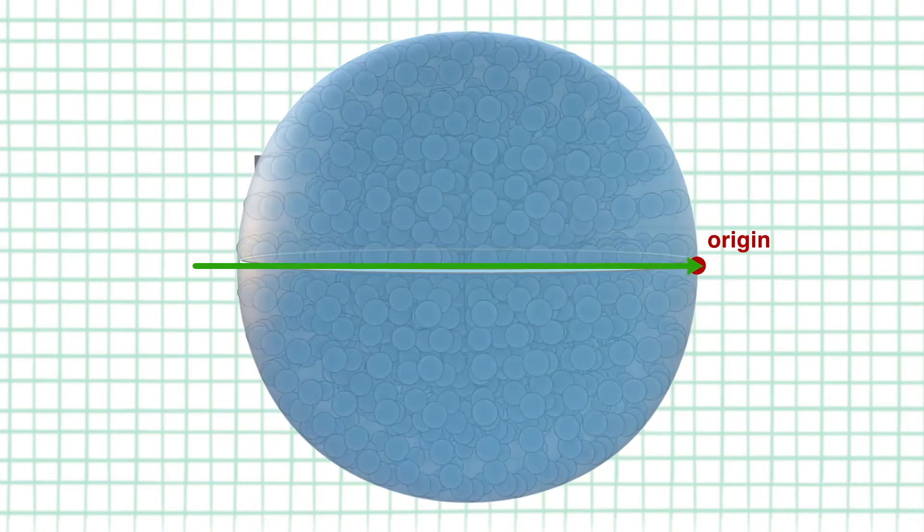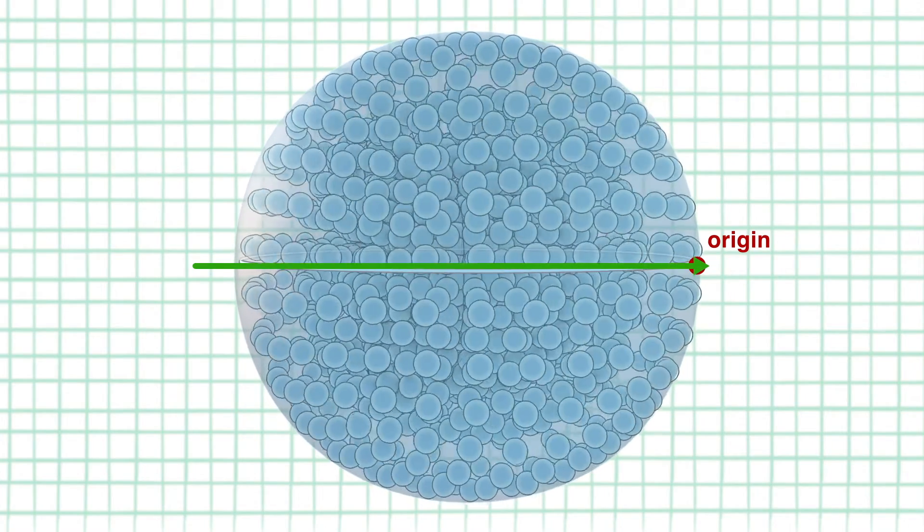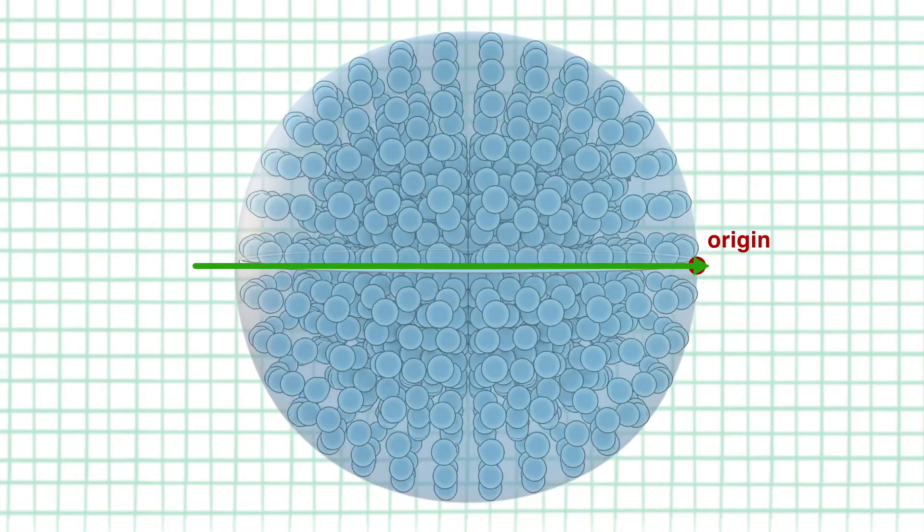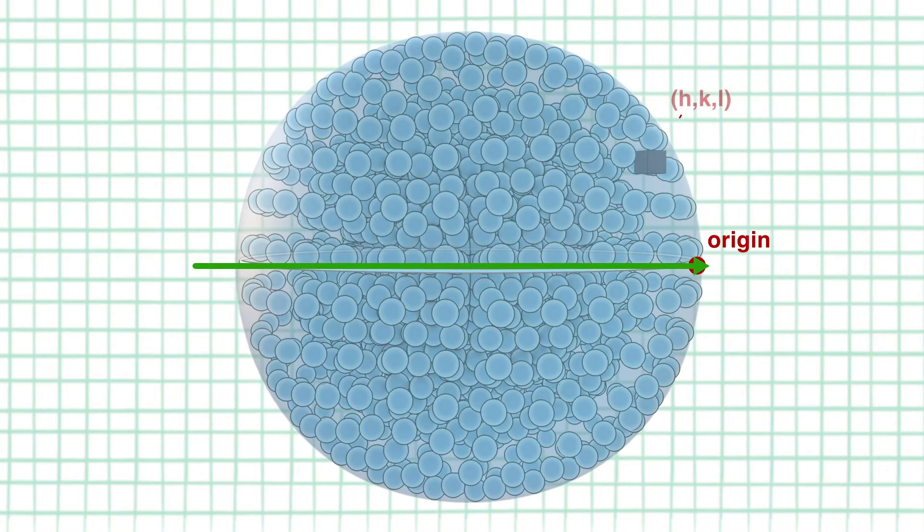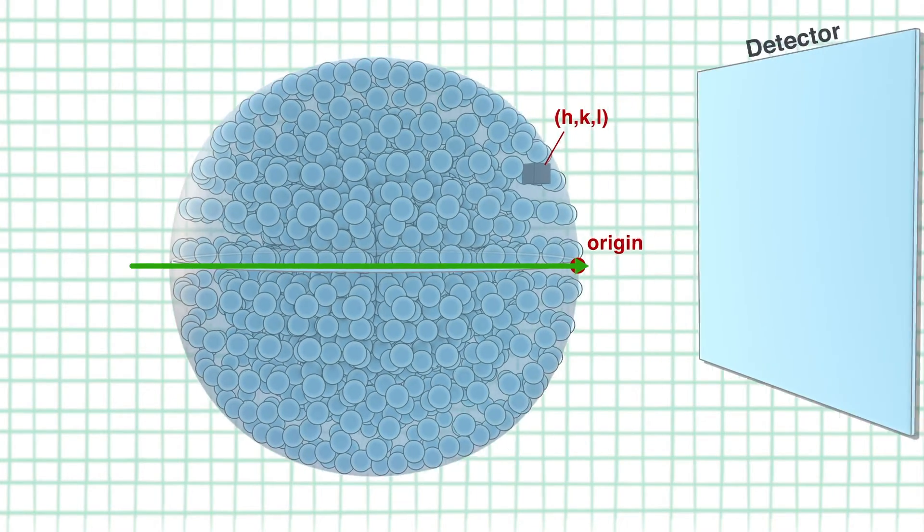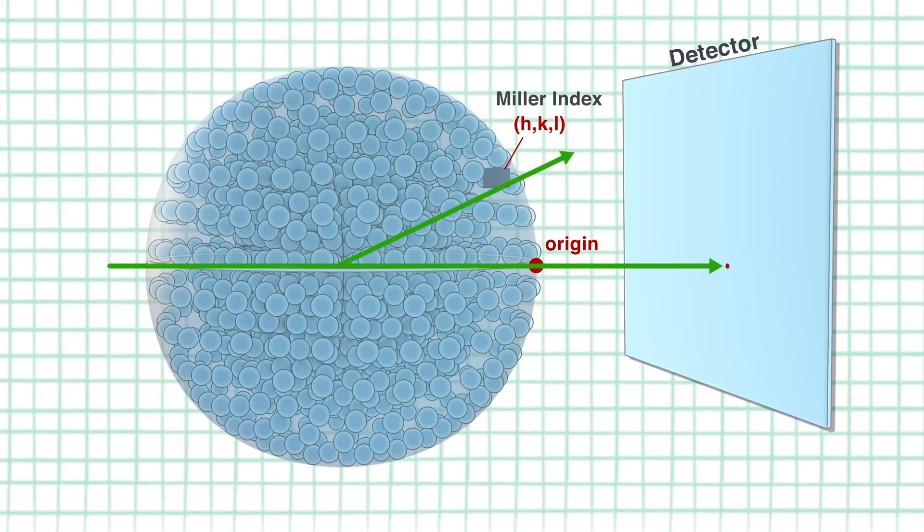Each spot on this Ewald sphere which represents constructive interference of x-ray diffraction from atoms in real 3D space can be assigned an index h, k, l. This is called a Miller index and these values denote how far the spot is from the origin on the surface of the Ewald sphere along the reciprocal axis h, k and l.